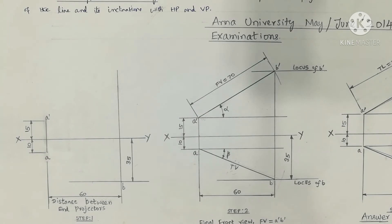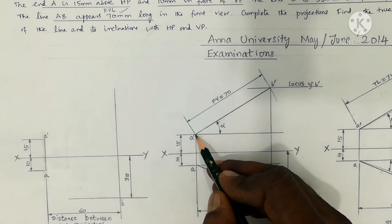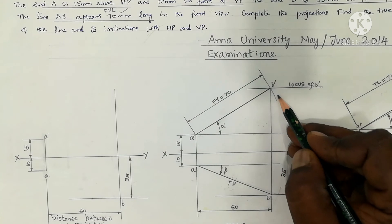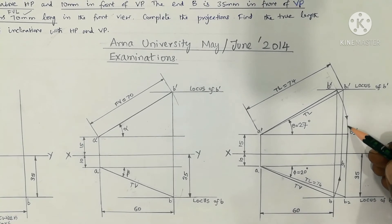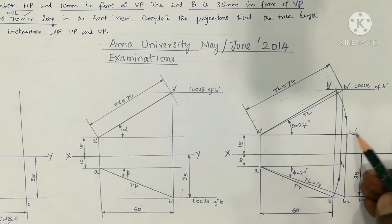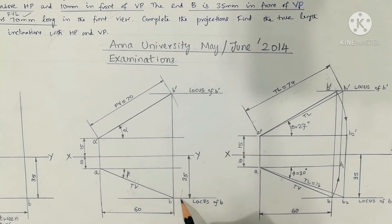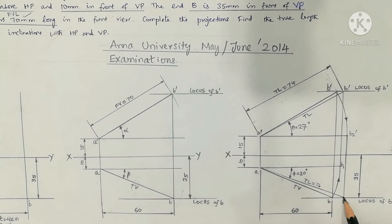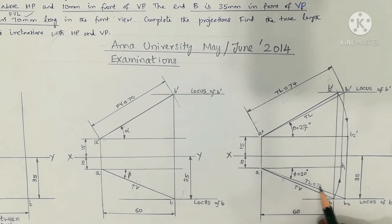That is theta and phi. To find true length: keep A' as the center and A'B' as the radius, draw an arc downward to meet the horizontal line passing through A'. From that point, draw a vertical projector line and mark point B2. Join AB2 — this is the true length of the line, measured as 74mm.